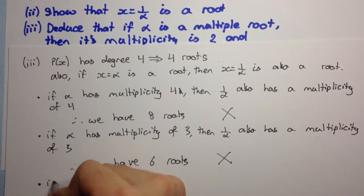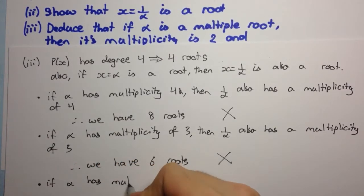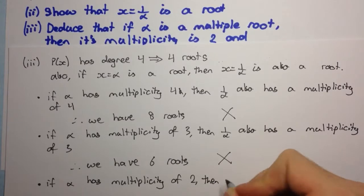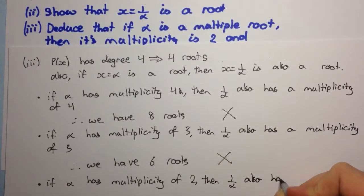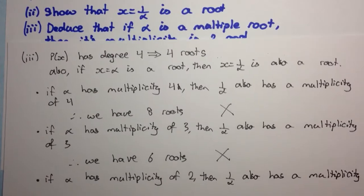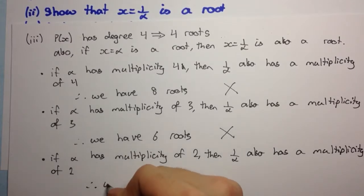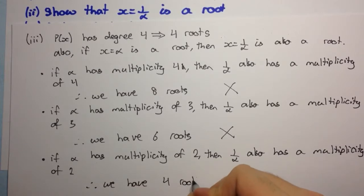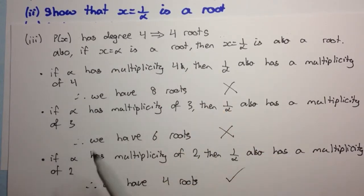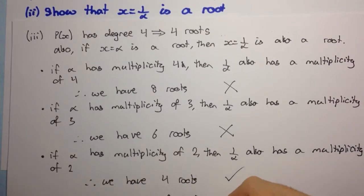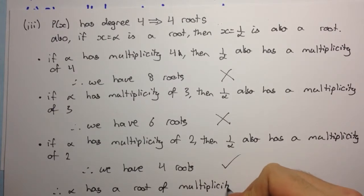The final case: if alpha has a multiplicity of 2, then 1 over alpha also has a multiplicity of 2. So we have 2 alphas and 2 one-over-alphas, giving us 4 roots, which is fine. We can have 4 roots because we have a degree of 4. Therefore, alpha has a root of multiplicity 2.